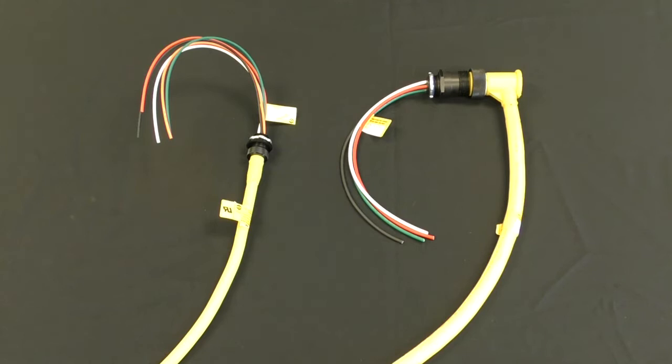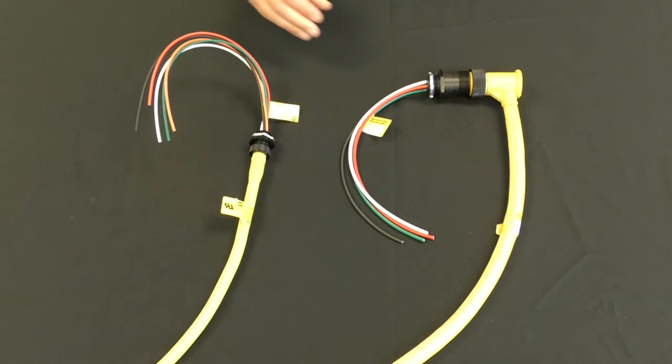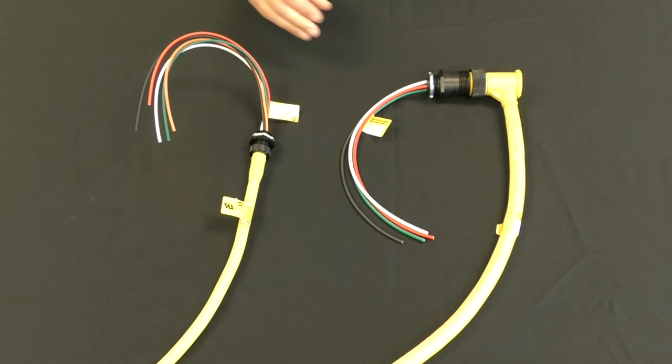Mini quick connect cord sets come in a variety of sizes and configurations. Here we have a 16 gauge straight and a 12 gauge 90 degree connector. Now let's highlight some features and benefits that make TPC's cord sets the best on the market.